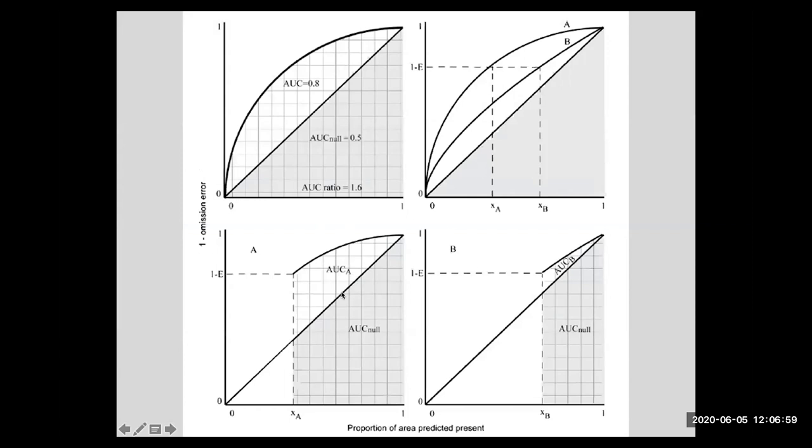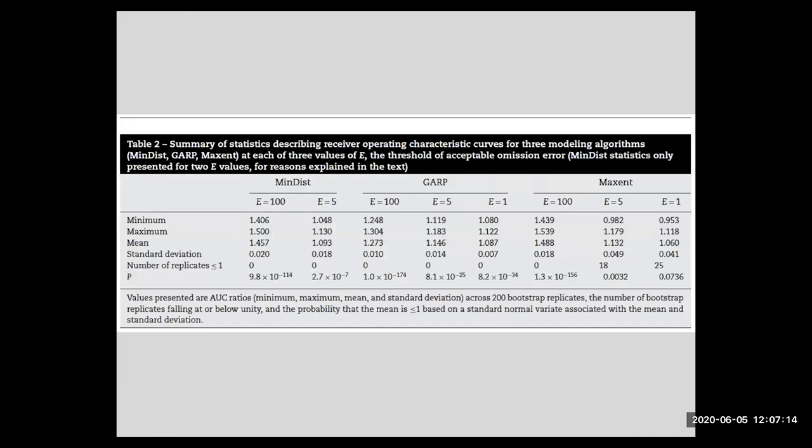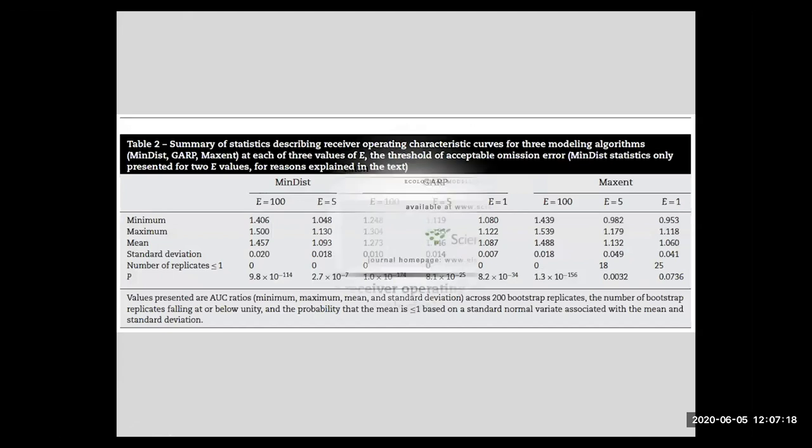And so all I'm saying is the results, when you look at the full ROC curve, can be very different from the results of a partial ROC analysis. And remembering that these higher omission parts of the full ROC curve, they may not be very relevant. And so I just throw out the partial ROC test as a way of avoiding some of these problems. And so I'll put these papers up so that you can look at them.